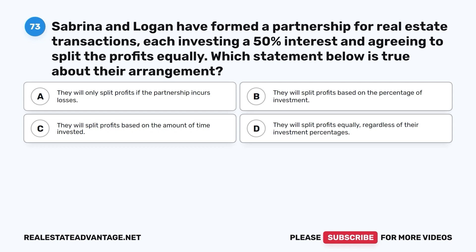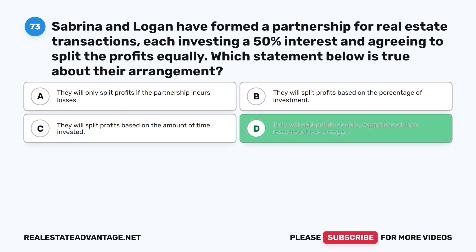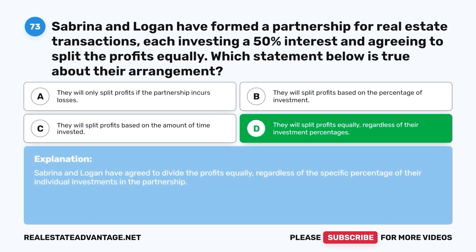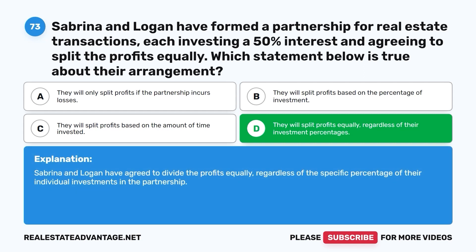Question 73. Sabrina and Logan have formed a partnership for real estate transactions, each investing a 50% interest and agreeing to split the profits equally. The correct answer is D. They will split profits equally, regardless of their investment percentages. Sabrina and Logan have agreed to divide the profits equally, regardless of the specific percentage of their individual investments in the partnership.